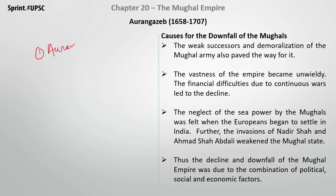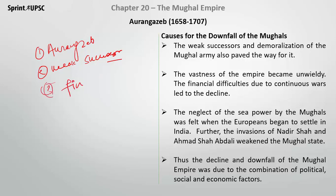The first reason was Aurangzeb's religious and Deccan policies. The second reason was weak successors after Aurangzeb. This also led to the demoralization of the Mughal army, and the vast empire became unwieldy. Financial difficulties due to the many wars were another major reason.